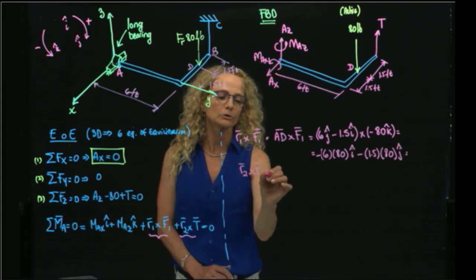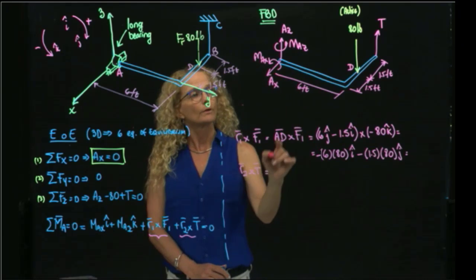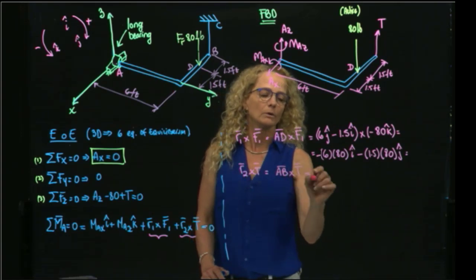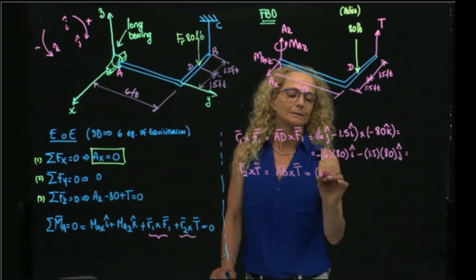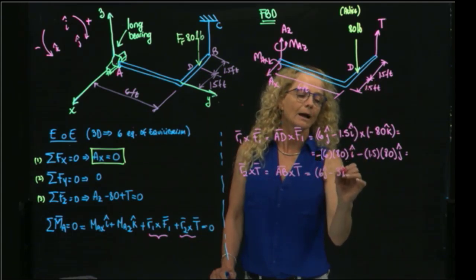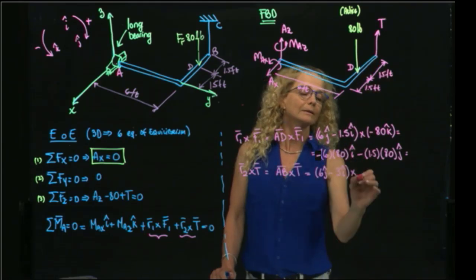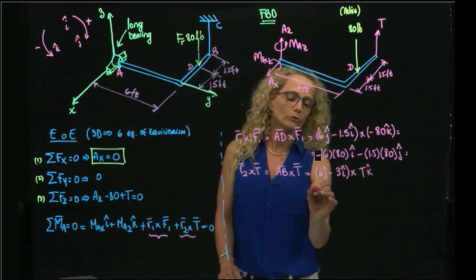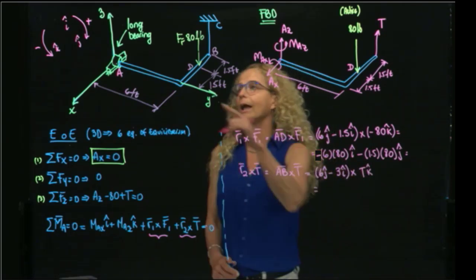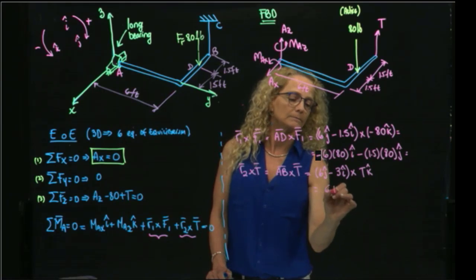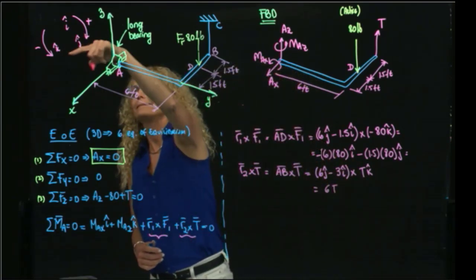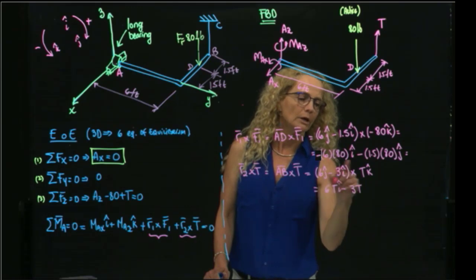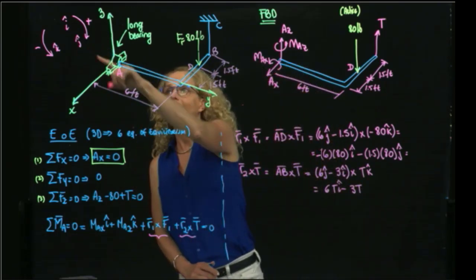For r2 cross the tension: r2 is the position vector from A to B crossed with the tension force, whose direction is in k with unknown magnitude T. Applying the same cross product rules - j cross k is positive i, and i cross k is negative j - this gives terms in i and negative j proportional to T.